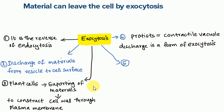In animal cells, exocytosis provides mechanisms for secreting many hormones, neurotransmitters, and digestive enzymes. So in animal cells, the examples of exocytosis include the discharge of hormones, neurotransmitters, and digestive enzymes.